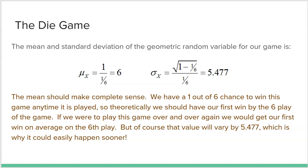The standard deviation is quite large at 5.477, because it's much more likely to happen sooner, but we would certainly expect it by the sixth trial. This geometric distribution is skewed right — do not think it would be normal. Early outcomes like 1, 2, 3, 4 are fairly likely, but extreme values far to the right become very, very unlikely as the distribution goes on infinitely.